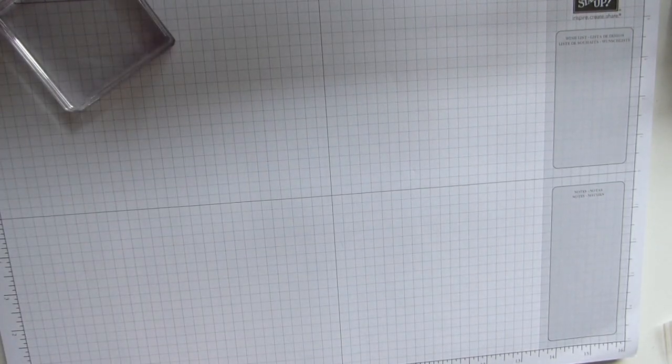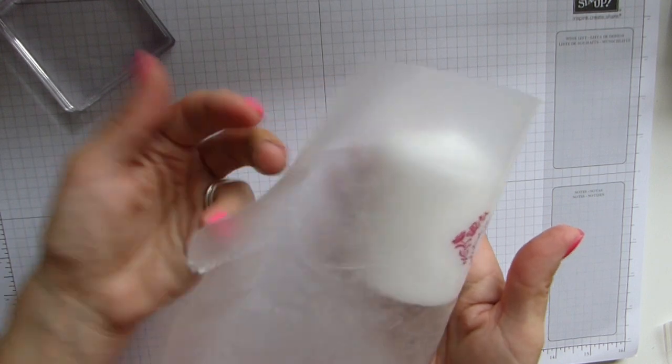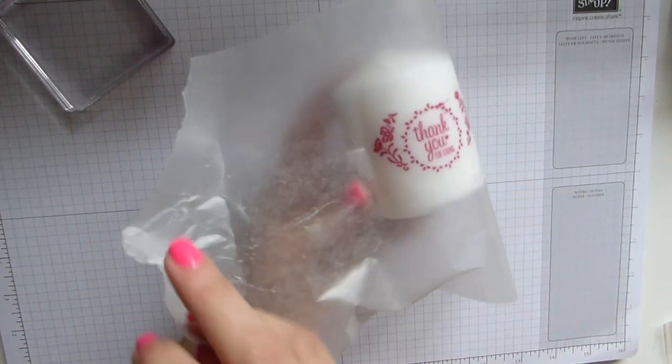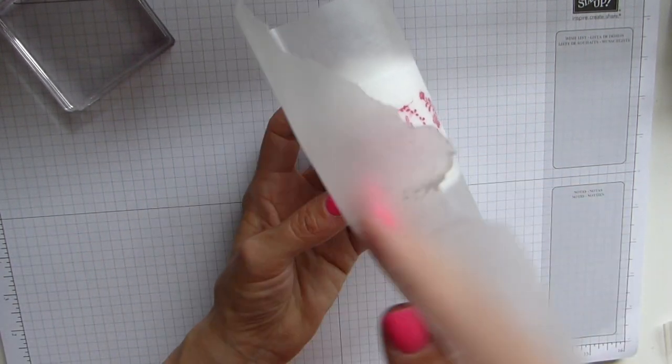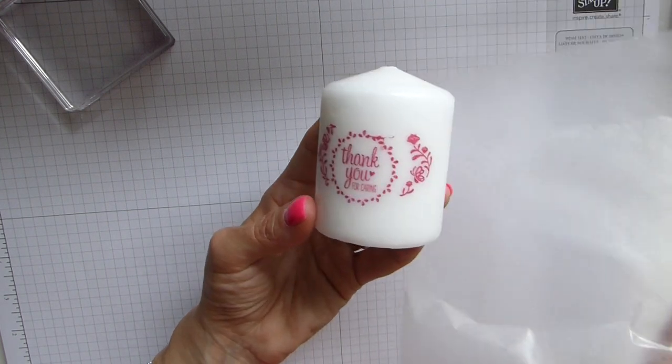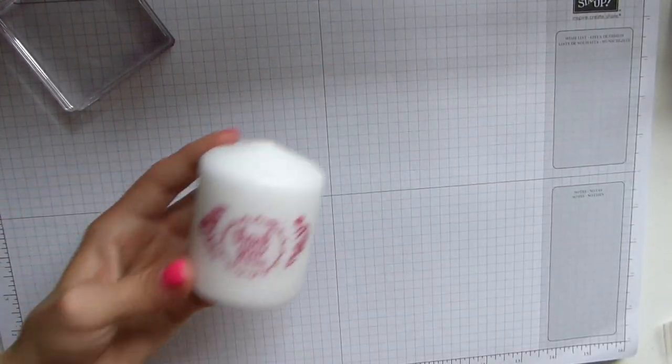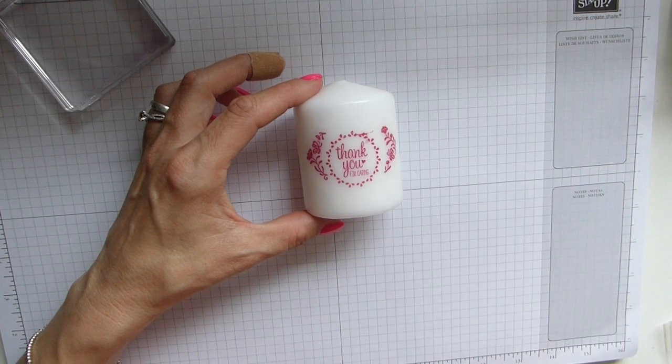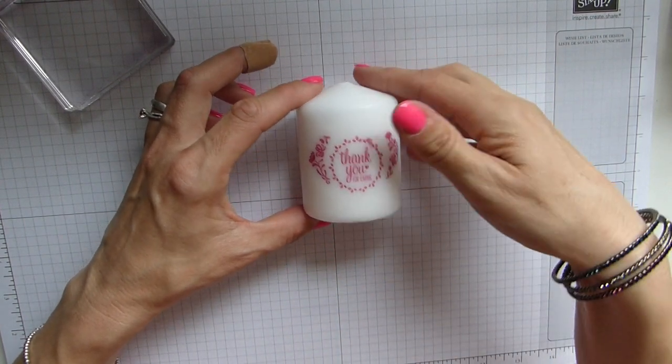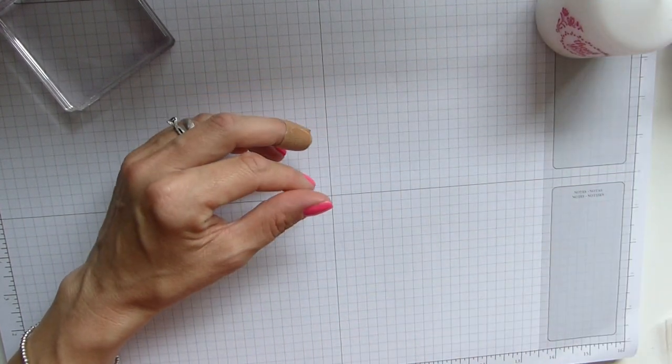That is that bit done. Then you just gently peel your wax paper off and there's your stamped candle, really pretty in our beautiful new ink colors. I'll pop that to one side.